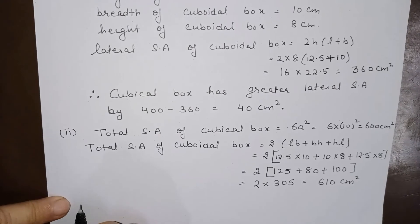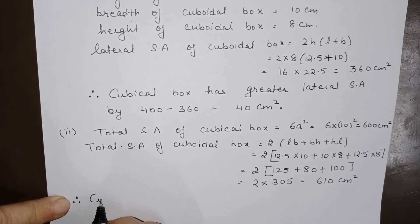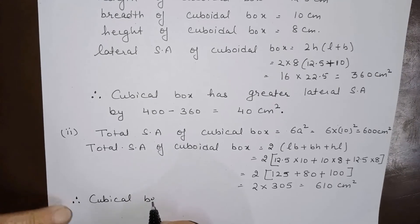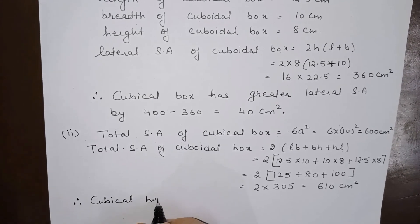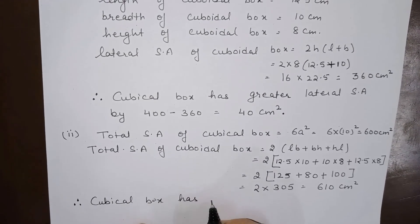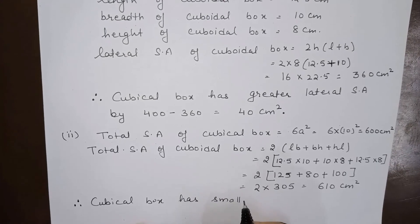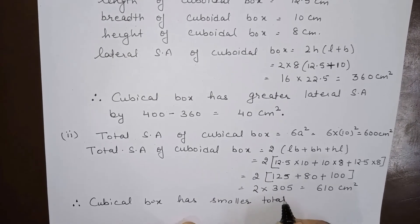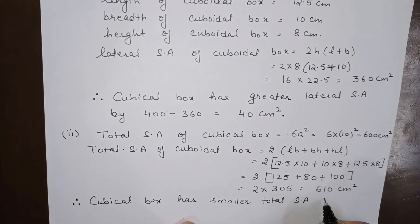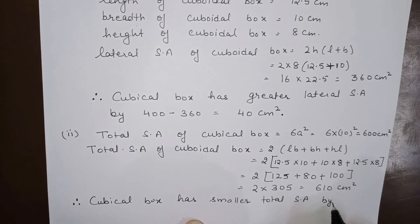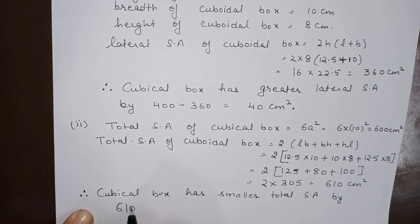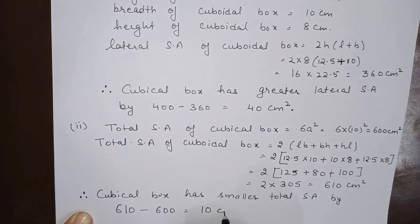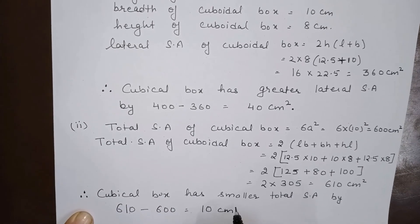Which box has the smaller total surface area and by how much? We can see that the cubical box has the smaller total surface area. Therefore, the cubical box has a smaller total surface area by 610 minus 600, that is 10 centimeter square.